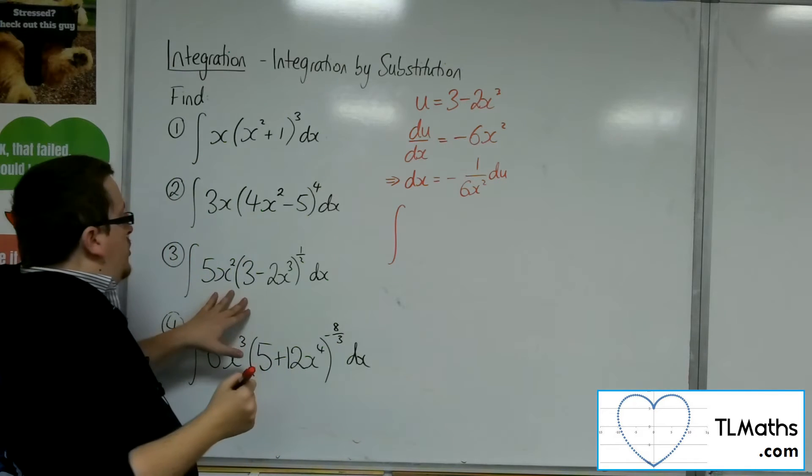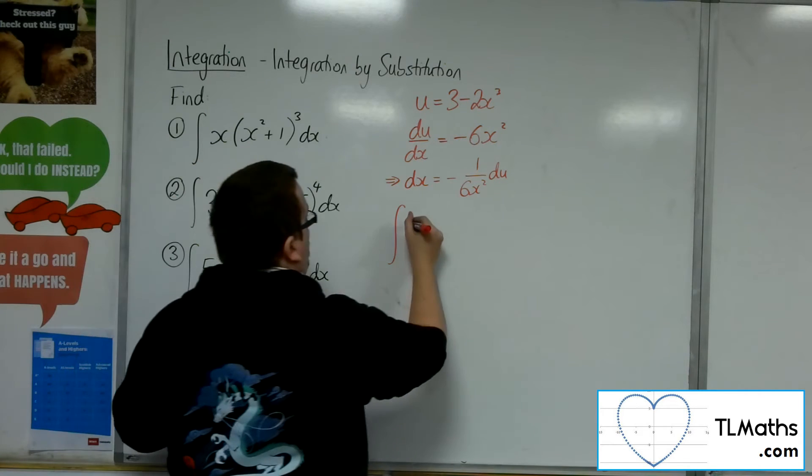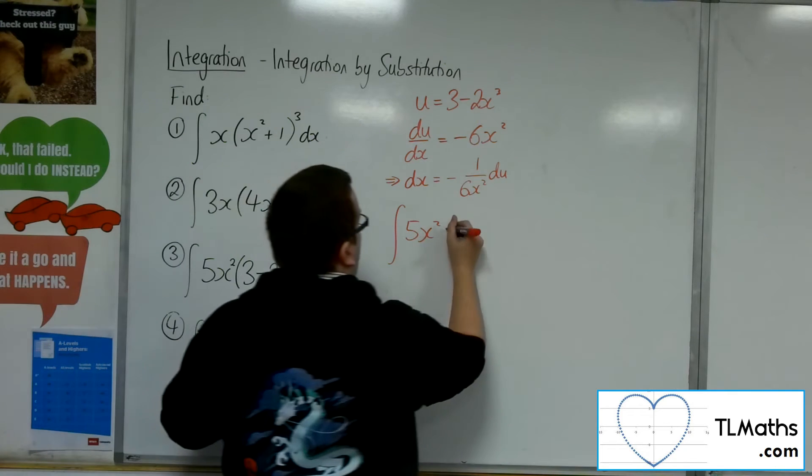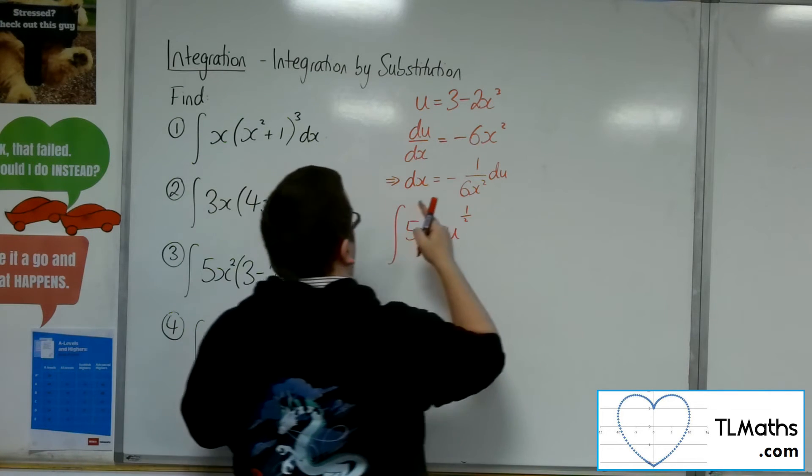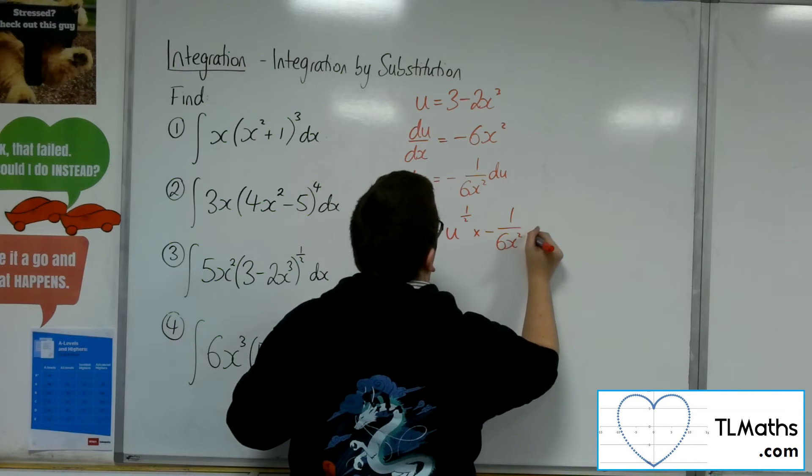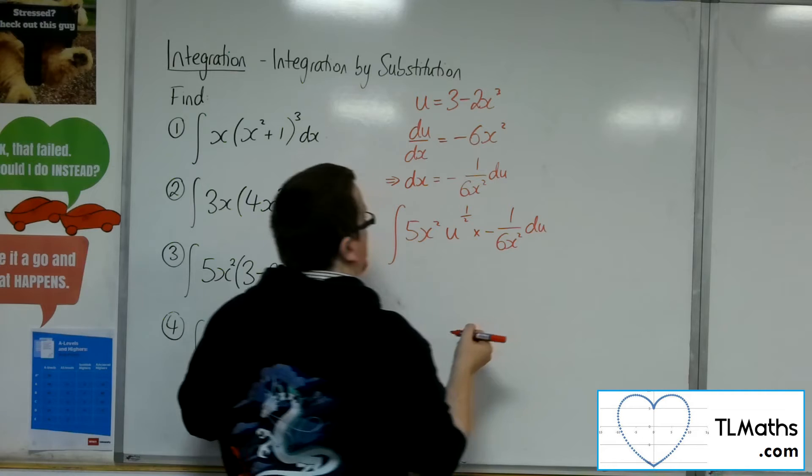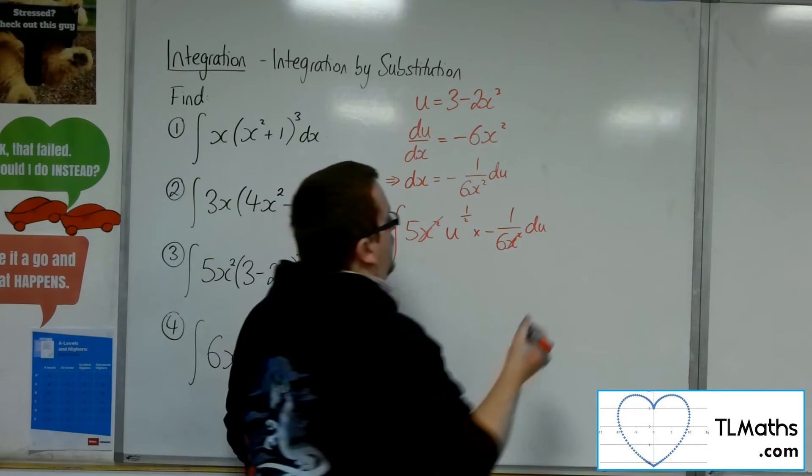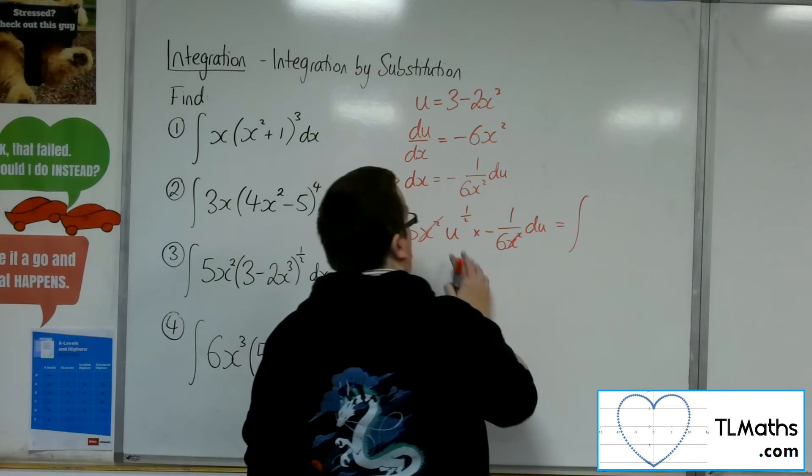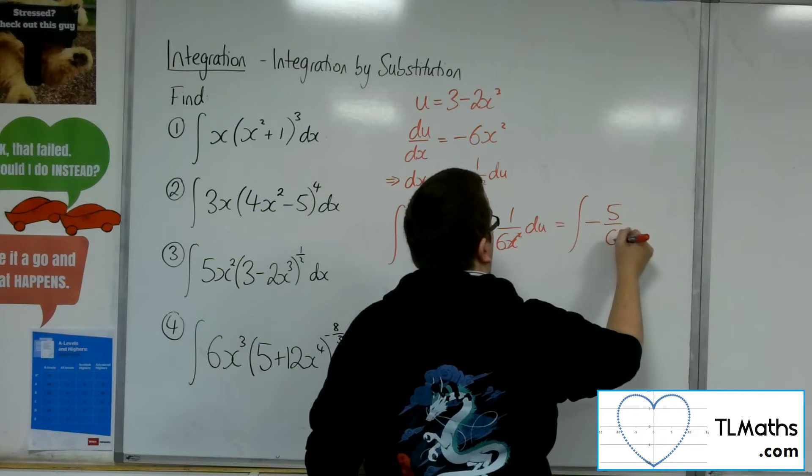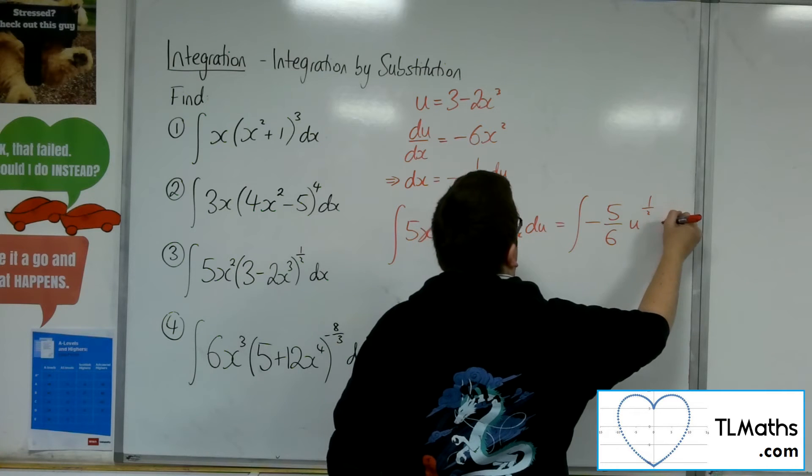My integral has 5x squared. I've got u to the power of 1 half. And the dx is replaced with this. Now the x squareds will cancel. So tidying that up, I've got minus 5 over 6 u to the half du.